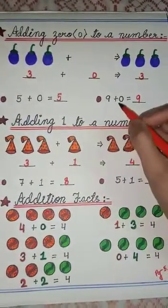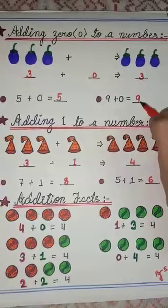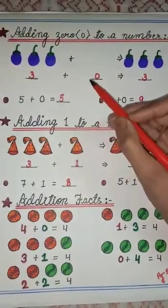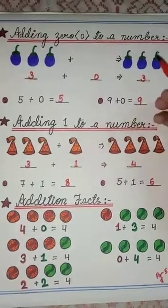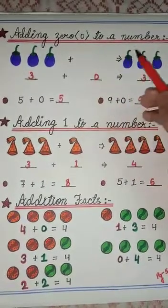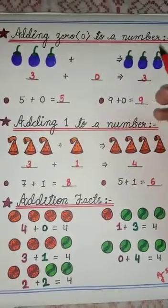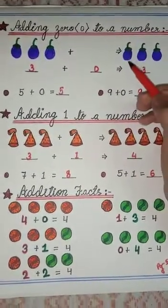Now here, 9 plus 0 will give 9 only. If we have 7, then 7 plus 0 gives 7. 2 plus 0 gives 2. We add 0 to any number, we get the number itself as the answer.